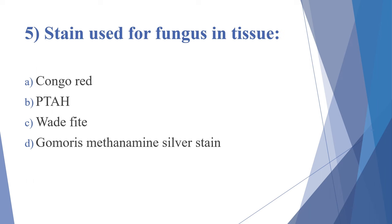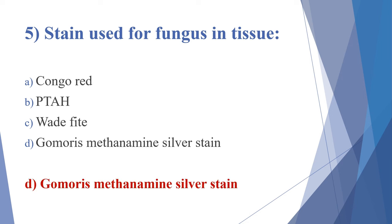Fifth question: the stain used for fungus in tissue. Options: Concordant, PTH, white stain, Gomori methenamine silver stain. The answer is option D, Gomori methenamine silver stain. In this stain, fungi turn black in color and the background and everything else is stained green.